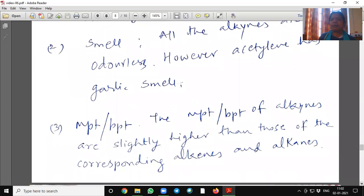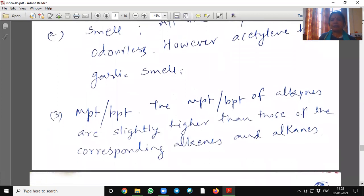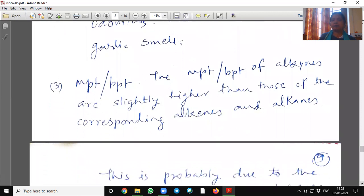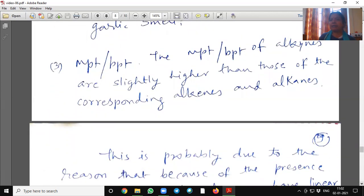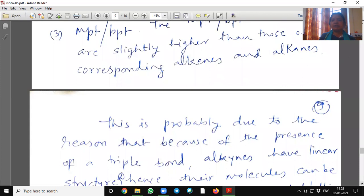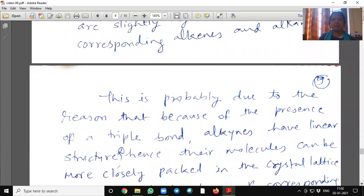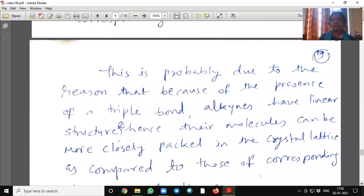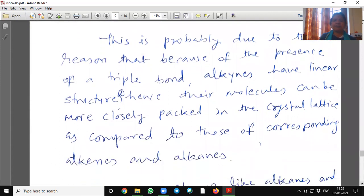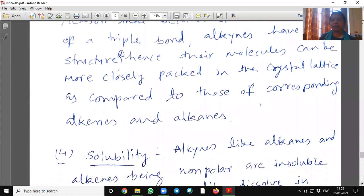Melting point, boiling point. The melting point, boiling point of alkynes are slightly higher than those of the corresponding alkenes and alkanes. This is probably due to the reason that because of the presence of a triple bond, alkynes have a linear structure. Hence, their molecules can be more easily packed in the crystallite as compared to those of the corresponding alkenes and alkanes.